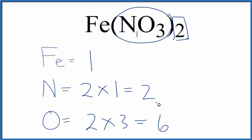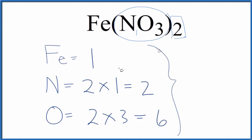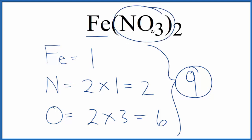If we want to know the total number of atoms for Fe(NO3)2, this iron 2 nitrate, we can just add these numbers up. 1 plus 2 is 3. 3 plus 6. That gives us 9 total atoms for Fe(NO3)2, iron 2 nitrate.